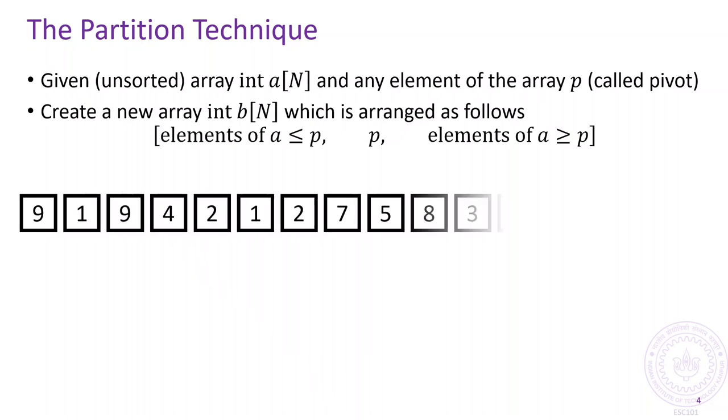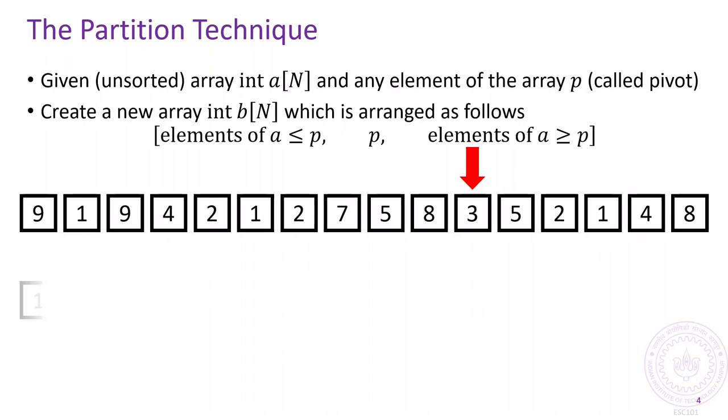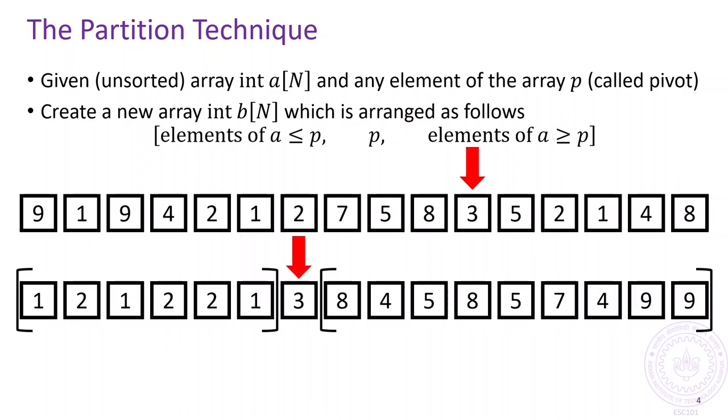For example, let us take this array and the element 3 as the pivot. A possible partitioned array would look like the following, with all elements smaller than 3 coming first, followed by 3, followed by all elements larger than 3.